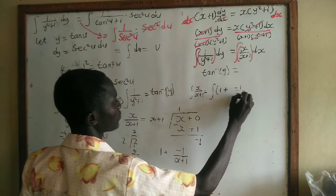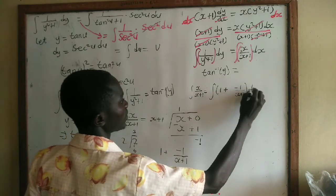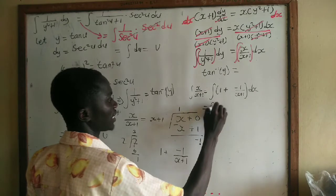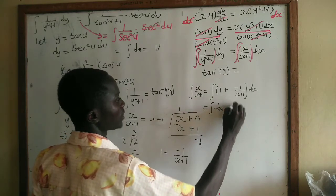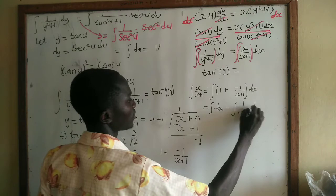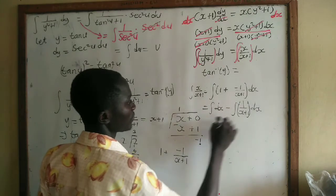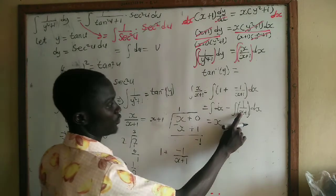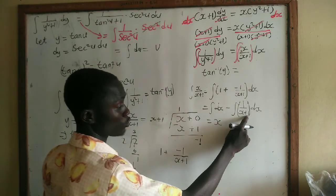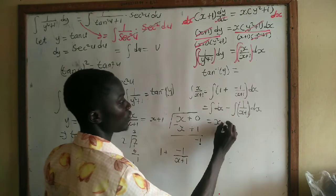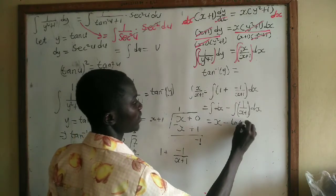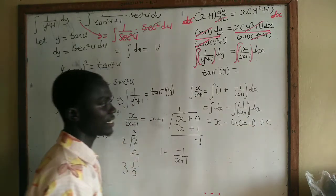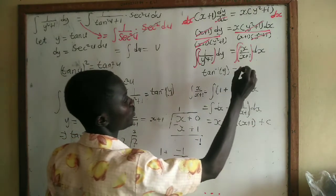So the integral of x/(x + 1) dx equals the integral of dx minus the integral of 1/(x + 1) dx. Integrating dx gives x, and integrating 1/(x + 1) gives ln|x + 1|. So we get x − ln|x + 1| + C.